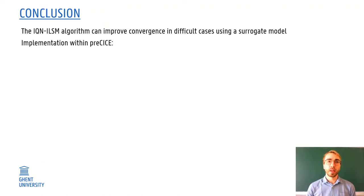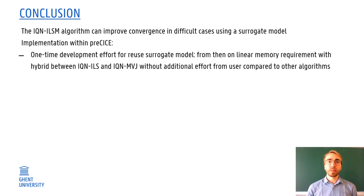In conclusion, the IQN-ILSM algorithm can improve convergence in difficult cases using a surrogate model which complements the black box methods which are already in preCICE. For implementing this in preCICE, there would be a one-time development effort for the reuse surrogate model, but only an acceleration block would need to be modified, with the main advantage that there is linearly scaling memory requirements, and actually the result is a hybrid version between IQN-ILS and IQN-MVJ. It's also important to note that this wouldn't require any additional effort from the user in order to use this algorithm. For the other types of surrogate models, they would require a bit more development effort, but also from the user in order to set up these surrogate models, which require a bit more effort.